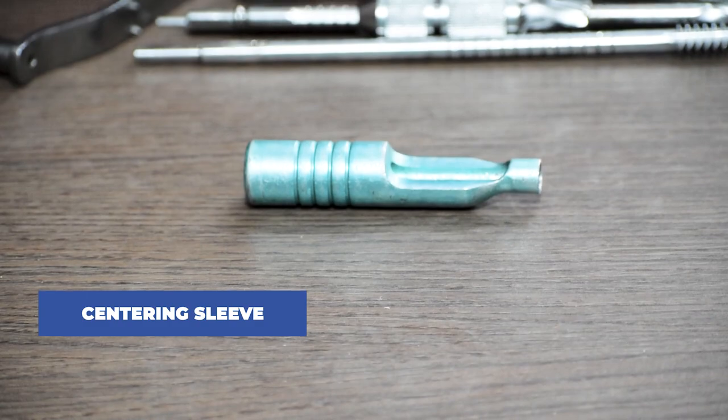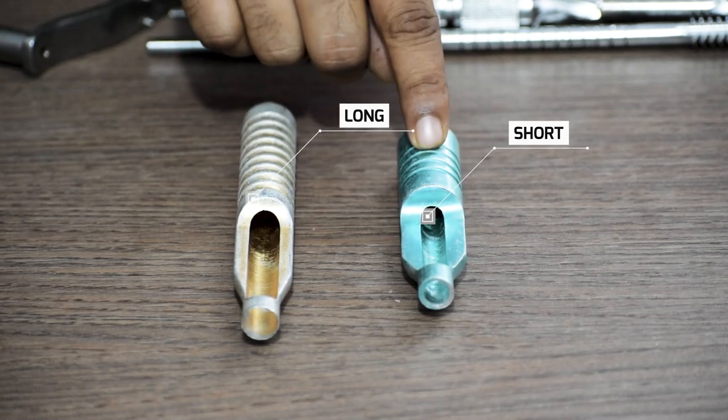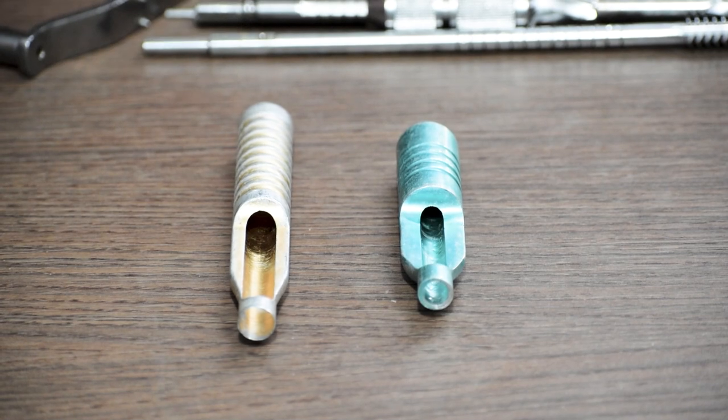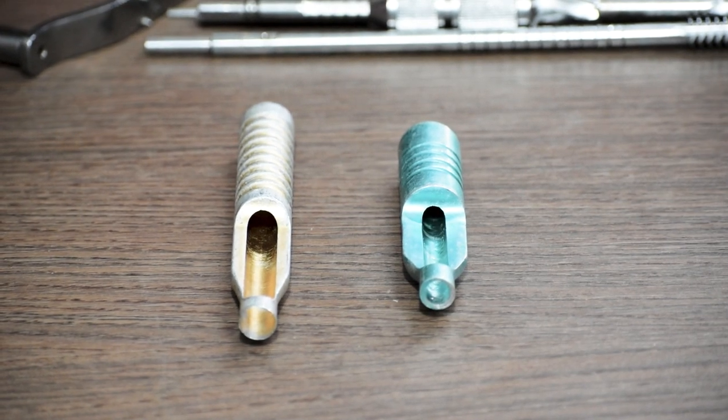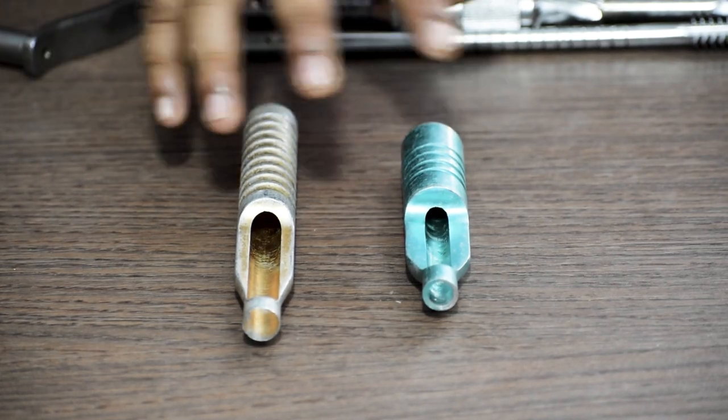Now these are centering sleeves. This is a long one and this is the short one. This helps keeping the alignment of other instruments in the center, generally used with a DHS or DCS tab.